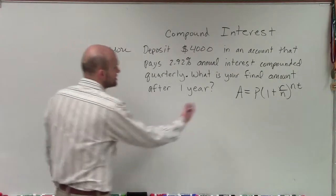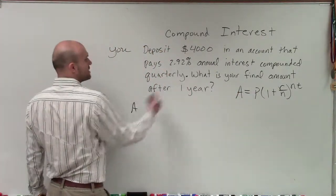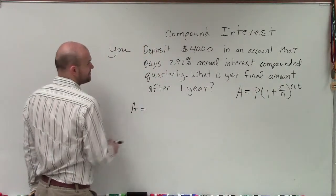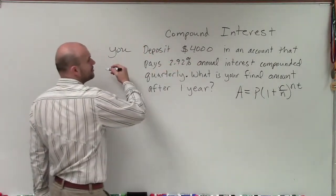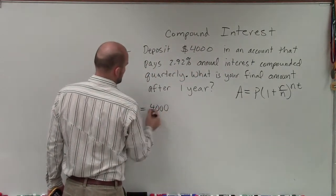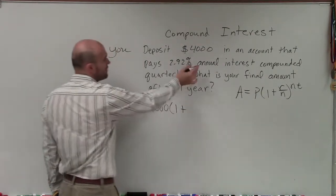A is what we're trying to solve for - our final value. P is our initial deposit or principal, which is $4,000. So we have A = 4000(1 + our rate...